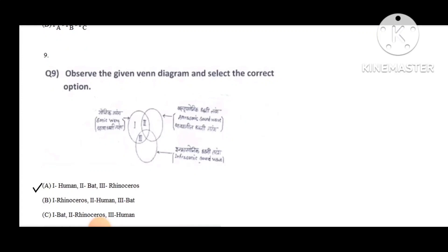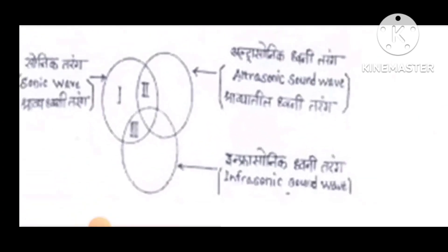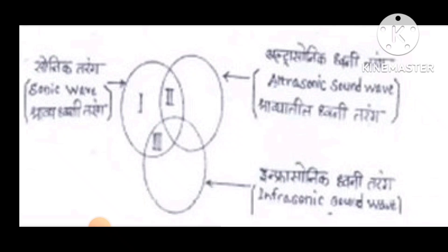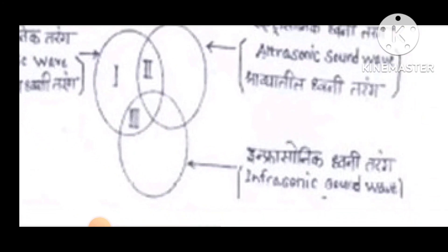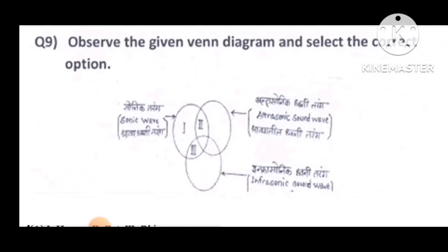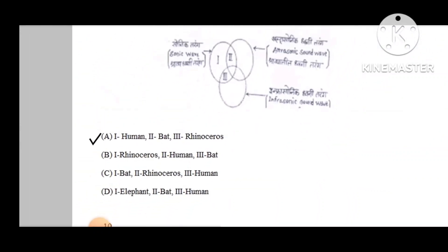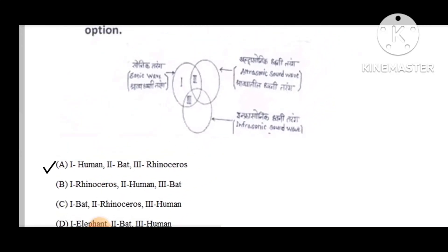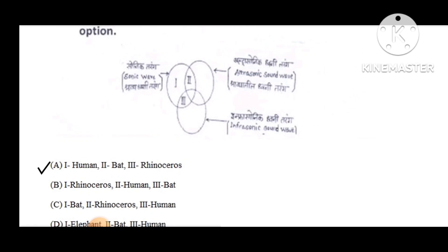Question number 9: Observe the given Venn diagram and select the correct option. The first section shows spinning waves, the second shows ultrasonic sound waves, and the third shows infrasonic sound waves. The correct option is: first — humans, second — bats, third — rhinoceros.